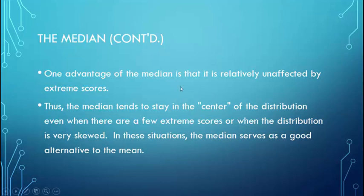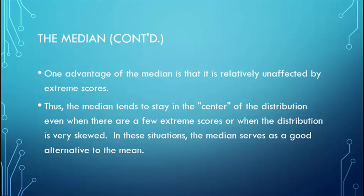The median needs to be used with score or numeric data. One advantage of the median is that it is relatively unaffected by extreme scores — the median stays in the center of your distribution when there are some extremely high or extremely low scores. So if you have most of your scores in one area but one very high or very low score, the mean becomes very skewed, but the median stays right in the middle. It becomes your best measure of Central Tendency when you have numeric data that is very skewed.